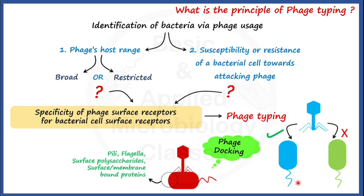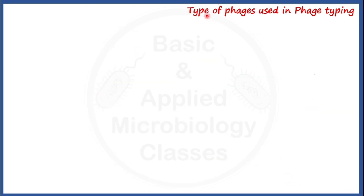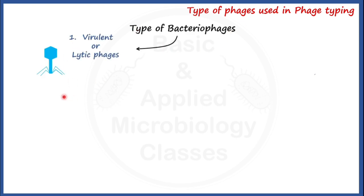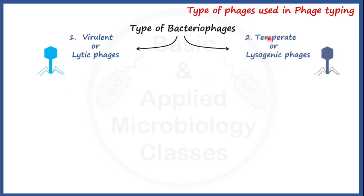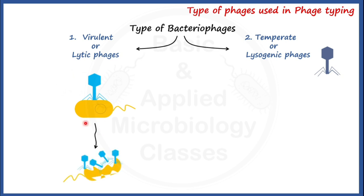Now let's talk about the types of phages used in phage typing. Bacterial phages are of two types. The first type is virulent or lytic phages, and the second type is temperate or lysogenic phages. Virulent or lytic phages, when they come into contact with a bacterial cell and replicate inside it, lead to the lysis of the bacterial cell at the end of their replication cycle.